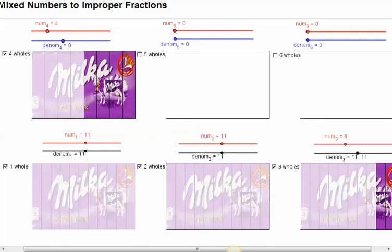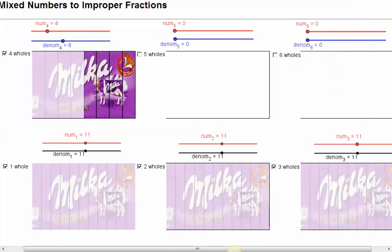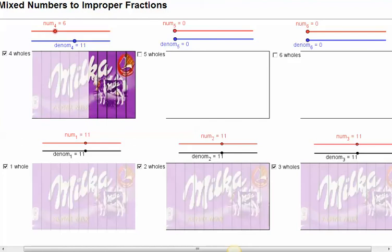That makes 33 when I've eaten 3 wholes. And we're aiming for 3 and 6 elevenths. OK, well there's 3 wholes, 33 elevenths, and then I've got 6 elevenths left. So 5, 6, so altogether that's 33 plus 6, 39 elevenths.